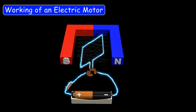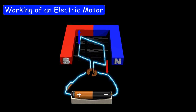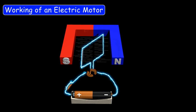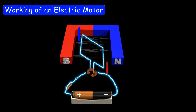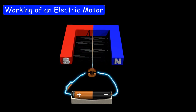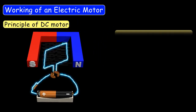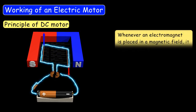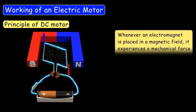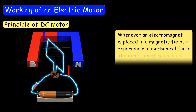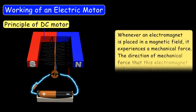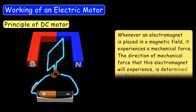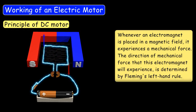When the electrical supply is on, the current starts flowing in the coil from the positive terminal of the battery to the negative terminal of the battery. And when a current flows through the coil, it produces a magnetic field around it and starts behaving like an electromagnet. So this electromagnet is lying inside the magnetic field of this permanent magnet. Now comes the working principle of a DC motor. Whenever an electromagnet is placed in a magnetic field, it experiences a mechanical force, and the direction of this mechanical force is determined by Fleming's left-hand rule.